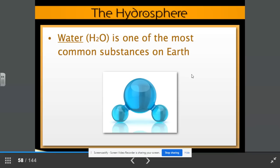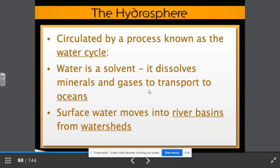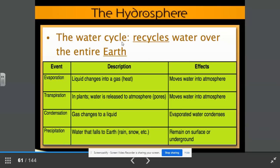Water, we know, has the chemical formula H2O. It is one of the most common substances on planet earth. It is circulated by a process known as the water cycle. Water is a solvent. That means it dissolves minerals and gases to transport to oceans. Surface water moves into river basins from watersheds. The water cycle recycles water over the entire earth. Remember, water is matter. Matter can never be created or destroyed. And we see this in the water cycle.